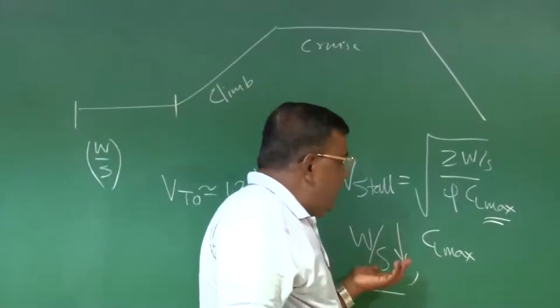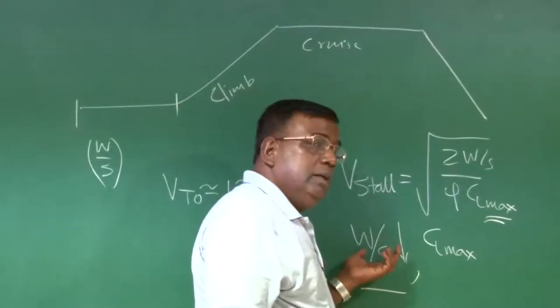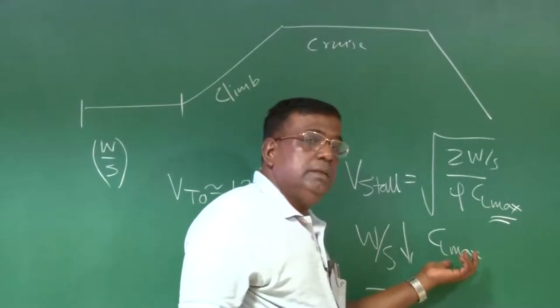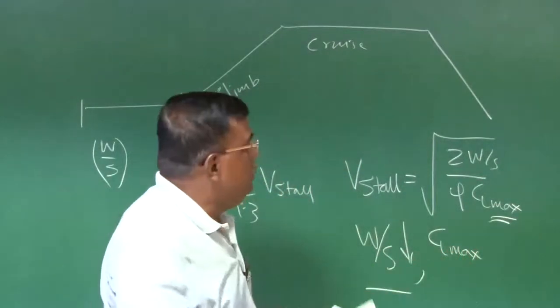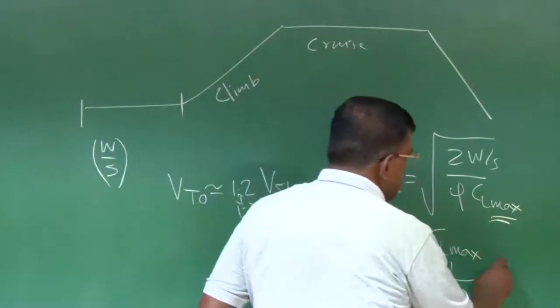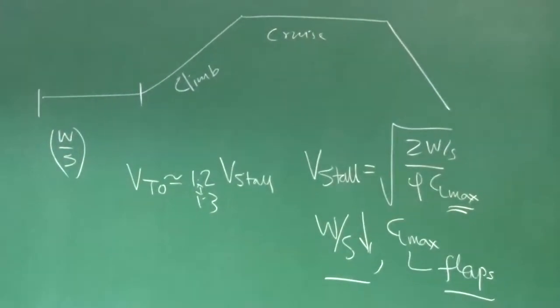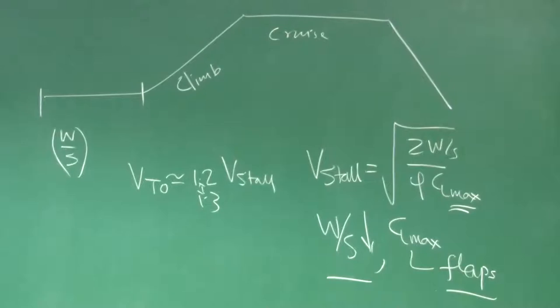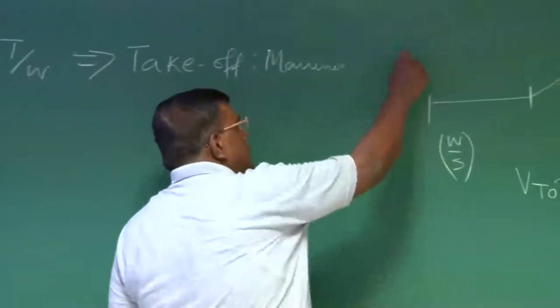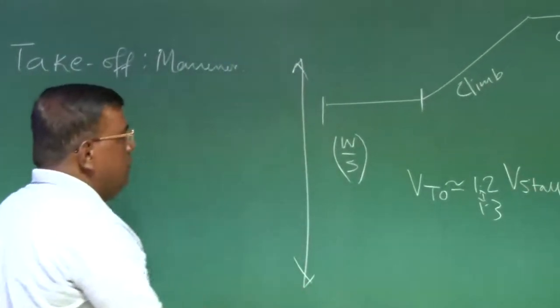Another way is you increase the wing area to some extent and also increase the CL max. How do you increase the CL max? We use flaps. There are various types of high lift devices, using those you can increase CL max from 1.2 to even 5, but you know that nothing is free, as you increase CL max, there will be increment in the drag and also it will generate more moment about the center of gravity.